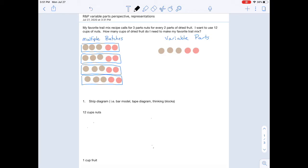We're continuing with our favorite trail mix recipe that calls for three parts nuts for every two parts of dried fruit. Now we want to use 12 cups of nuts and we're asking how many cups of dried fruit do I need to make my favorite trail mix.